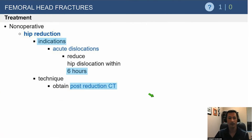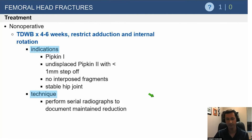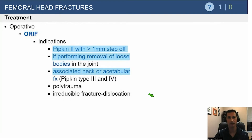These can be treated non-operatively. Get the hip reduced as soon as possible, then get your CT scan. Most of the time, Pipkin Type 1 or infrafoveal fractures can be treated with non-operative management — touchdown weight bearing for six weeks is easy to remember. As long as there are no interposed fragments and the hip joint is stable, this is very reasonable. Check frequent early x-rays to ensure no subtle subluxation is occurring.